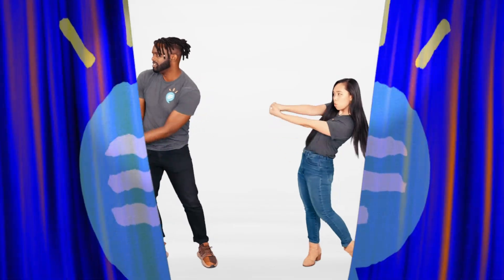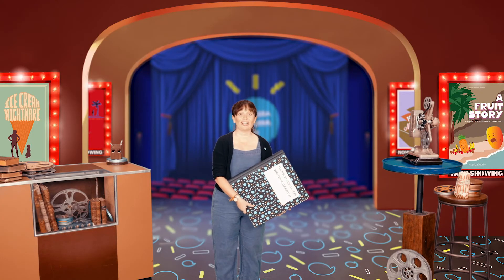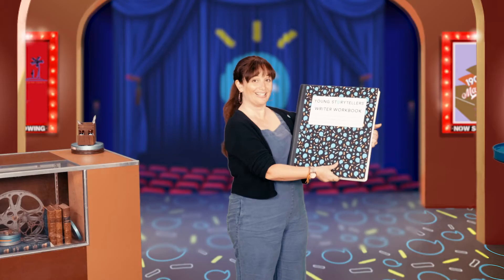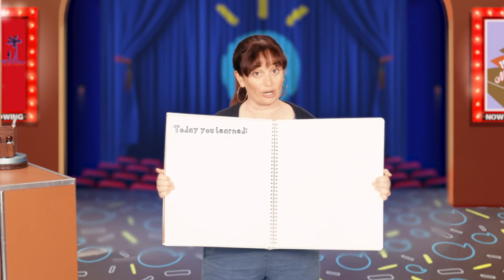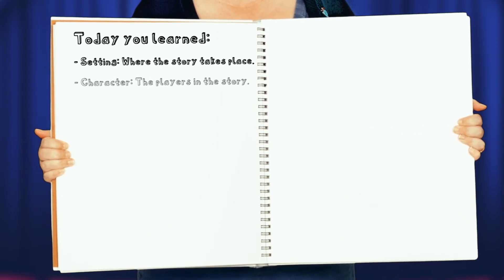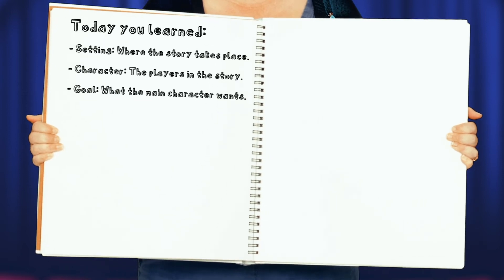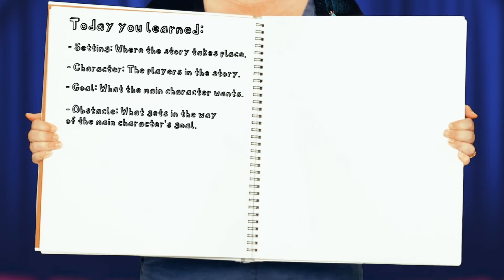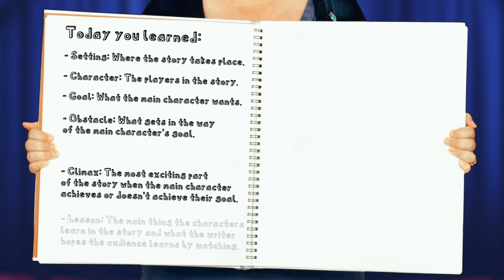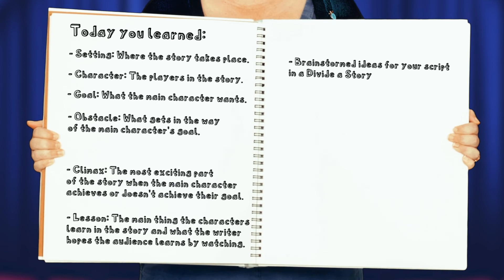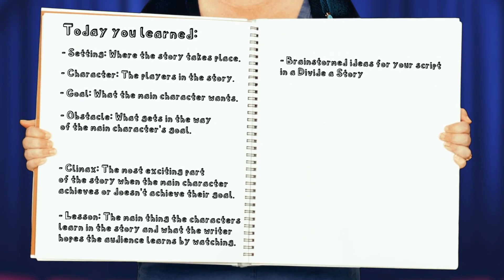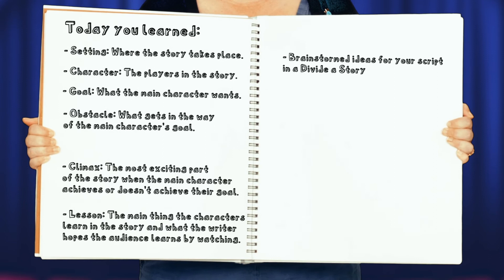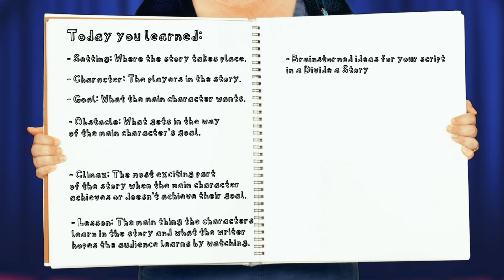Pilar, would you please help me summarize everything? Happy to, Curtis. Today, we reviewed the main elements in a story: setting, character, goal, obstacle, climax, and lesson. And you came up with a few story elements for your scripts. And you even selected your top one to two favorite story ideas for your future script.